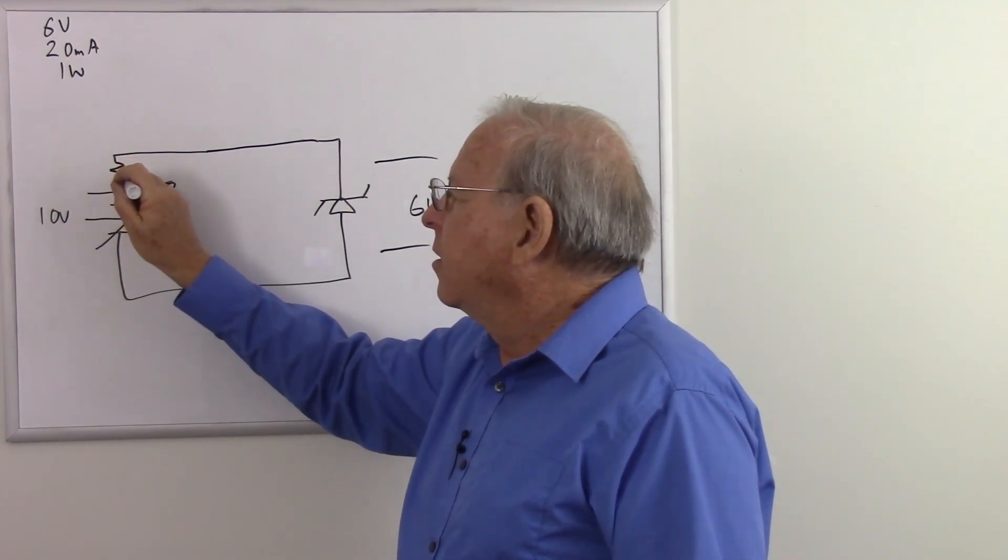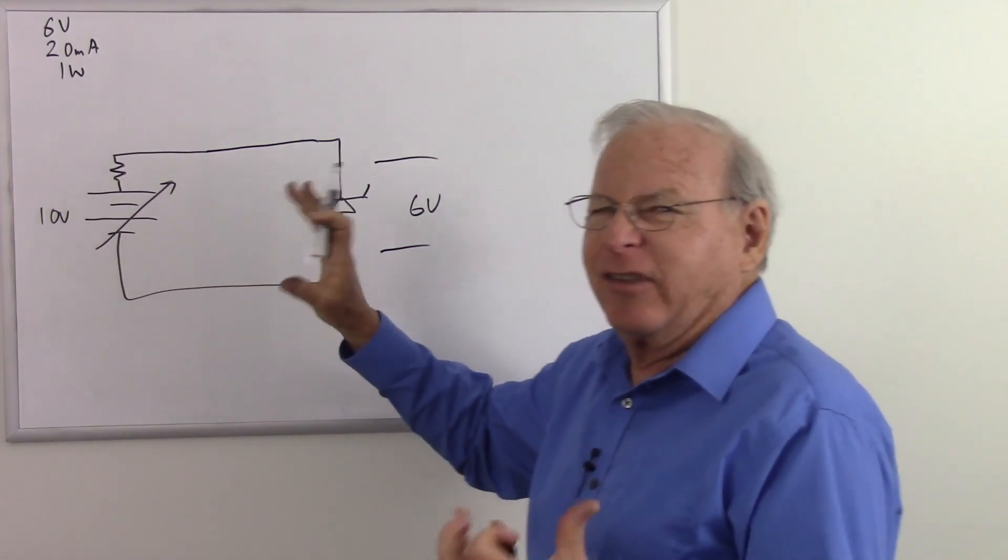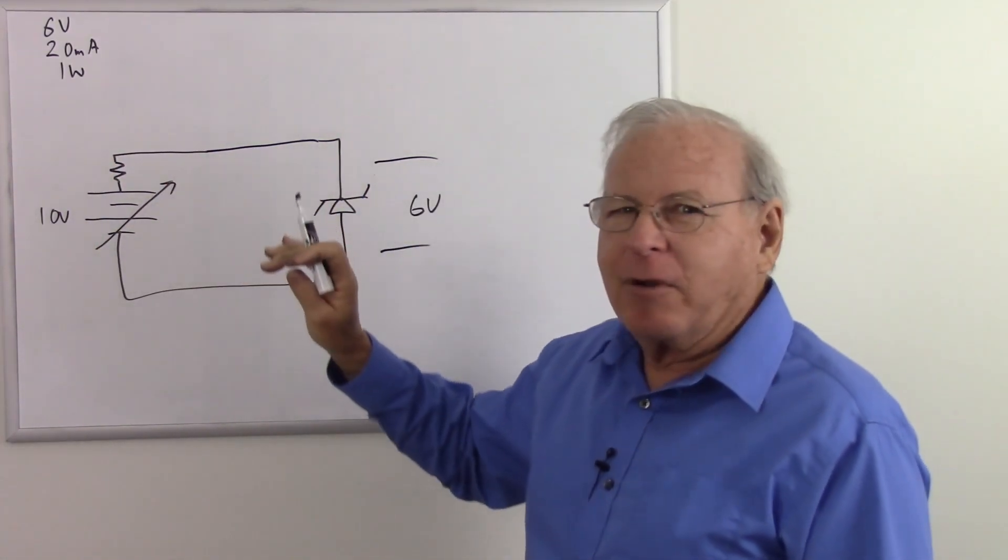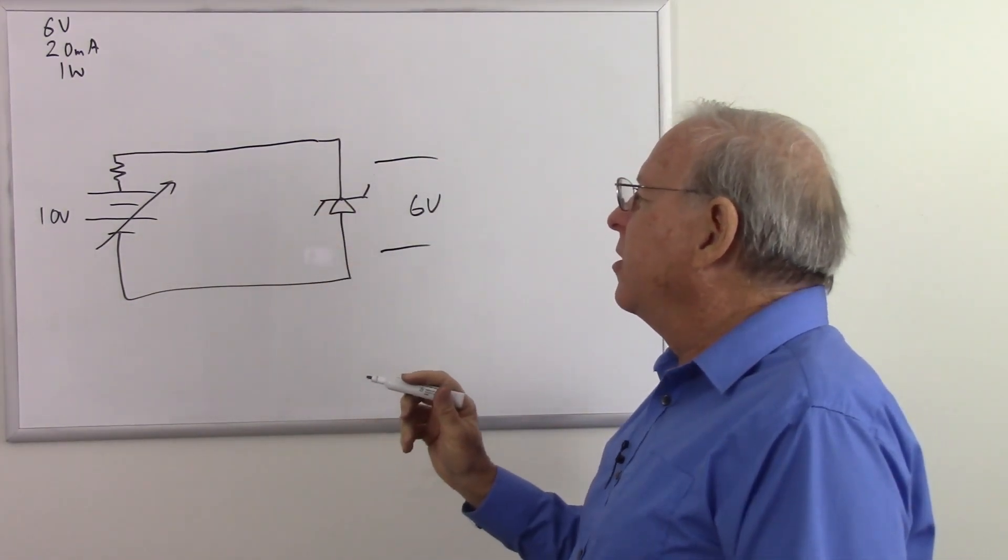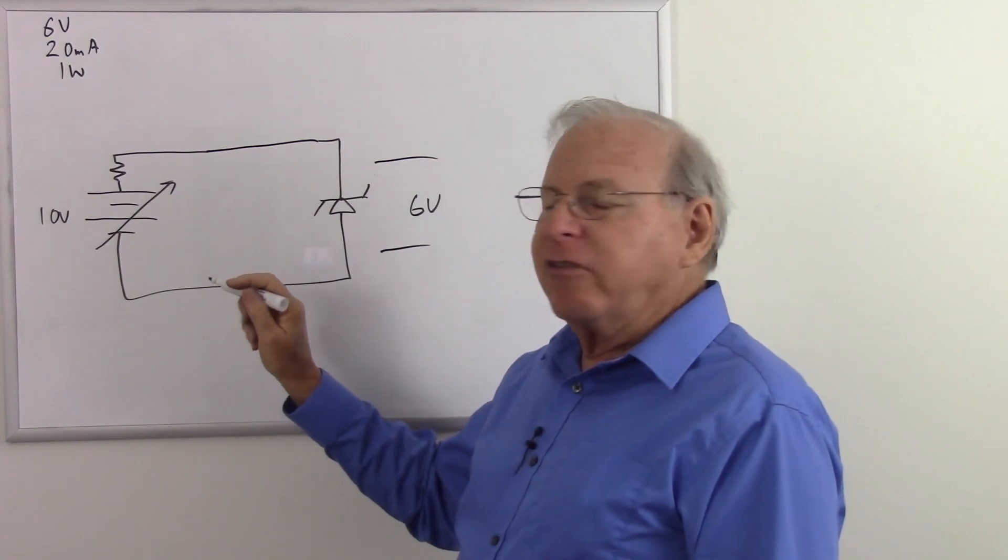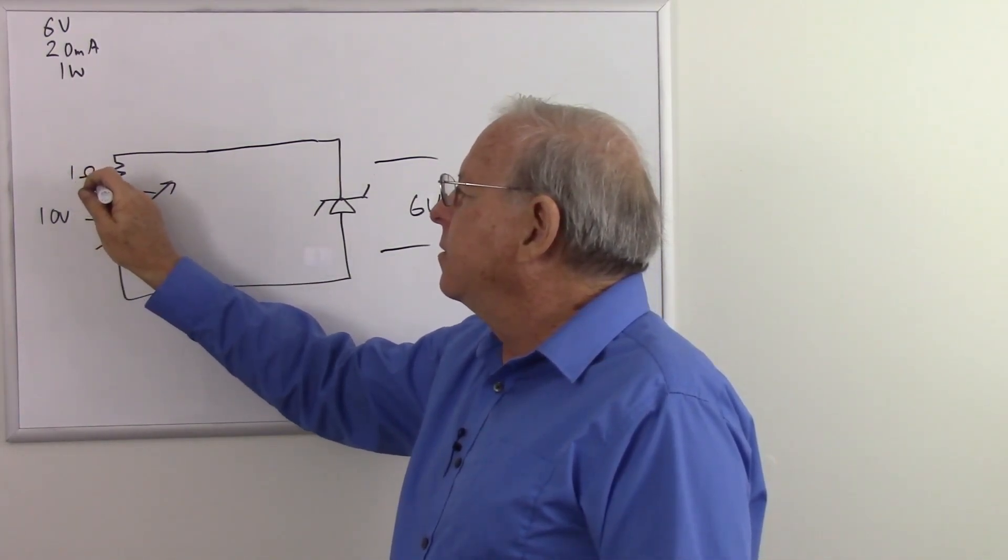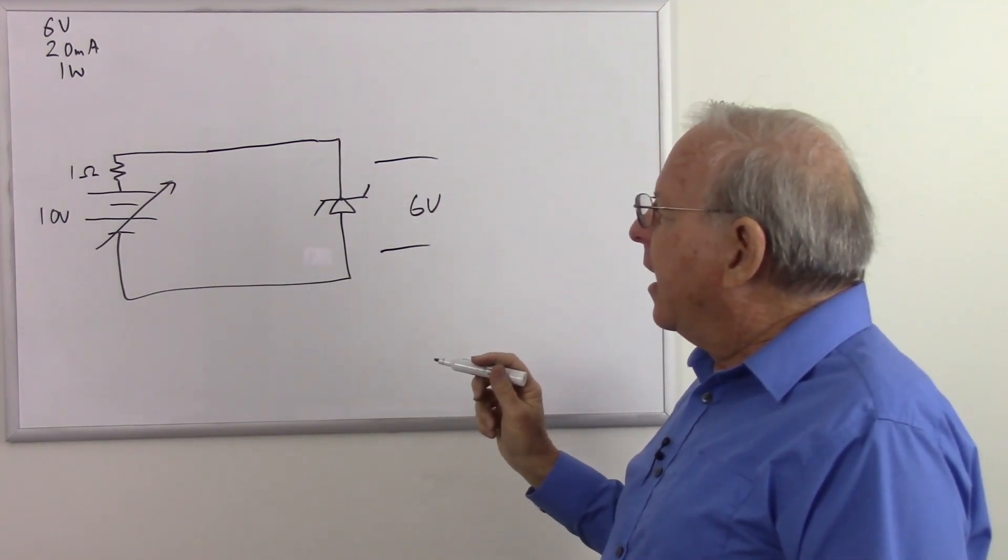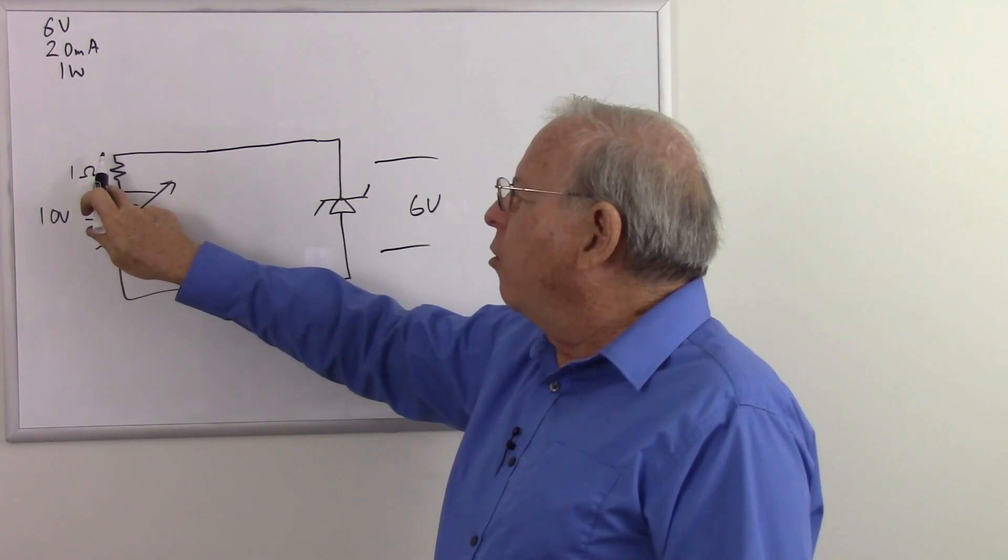So there's our internal resistance or output impedance, depending on what kind of circuit it is. It's the same thing. If it's a battery, we call it internal resistance. Virtually everything else, we call it output impedance. But we do have that bit of resistance there. And let's just say it's 1 ohm. So what do we have now? We have 6 volts here, 10 volts there, 1 ohm there.